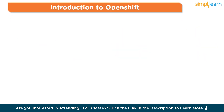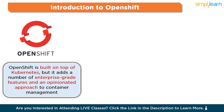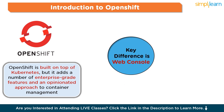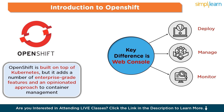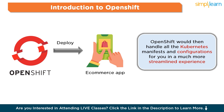Now, to contrast with OpenShift, let's explore how it builds upon Kubernetes and differentiates itself. OpenShift is built on top of Kubernetes, but it adds a number of enterprise-grade features and an opinionated approach to container management. The key difference is the OpenShift web console — a centralized hub where you can deploy, manage, and monitor all of your applications in one place. It abstracts away a lot of the underlying Kubernetes complexity, making it easier for developers and operators to work with. For example, to deploy your e-commerce app on OpenShift, you could simply click a button in the console to create a new application. OpenShift would then handle all the Kubernetes manifests and configurations for you, in a much more streamlined experience compared to the manual YAML editing required in Kubernetes.